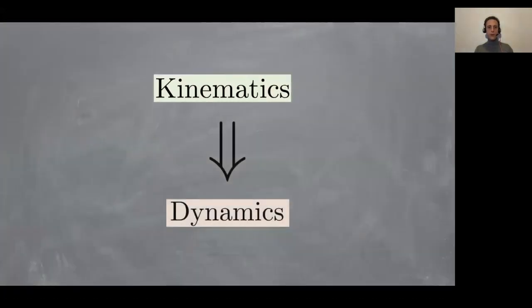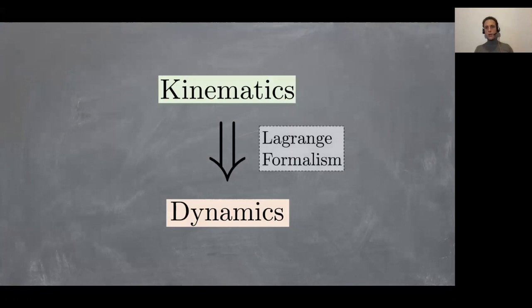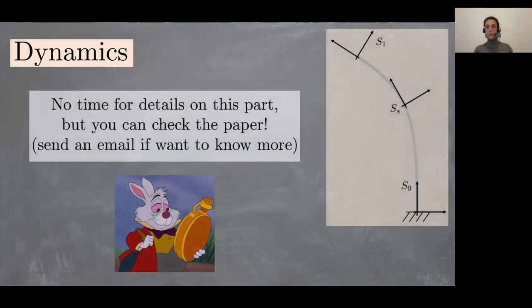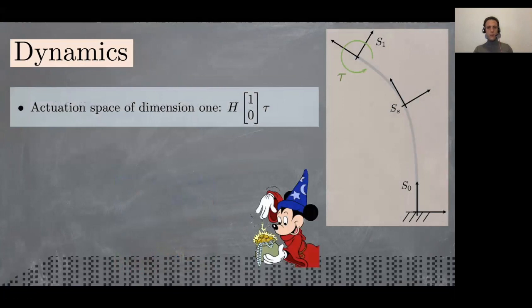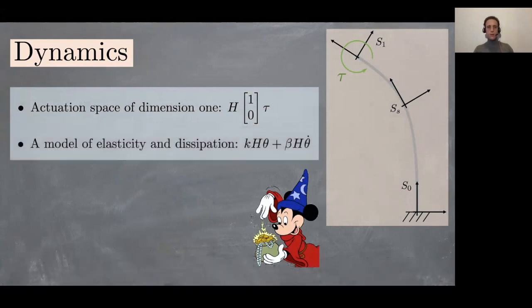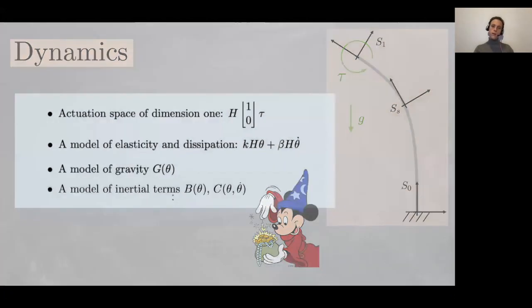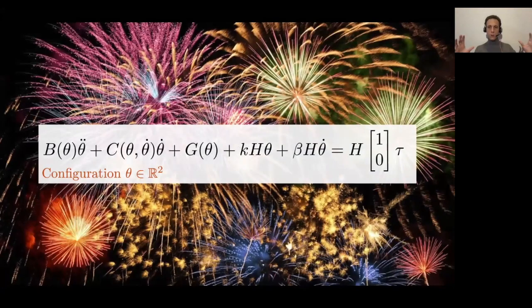Now that we have the kinematics, we can obtain the dynamics by means of Lagrangian formalism. We don't have time to discuss this here, but you can look at the paper. In a nutshell, we have a description of input characteristics, a model of elasticity and dissipation, a model of gravity, a model of the inertia terms, and we can put everything together to have a closed form expression of the robot's dynamics.